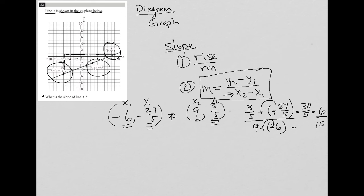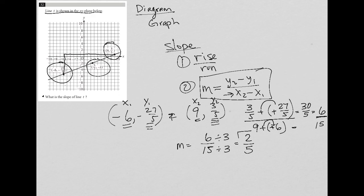So we have six over 15. That is what my slope equals, but I can reduce that fraction because three goes into both six and 15 — three is the greatest common factor. Six divided by three is two, and 15 divided by three is five. So the simplified answer is two fifths. The slope of this line is equal to two over five.